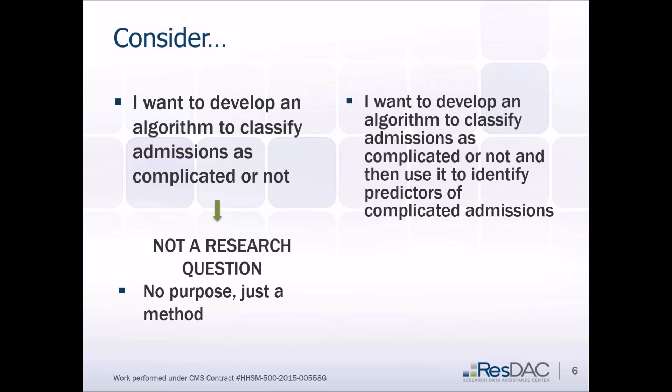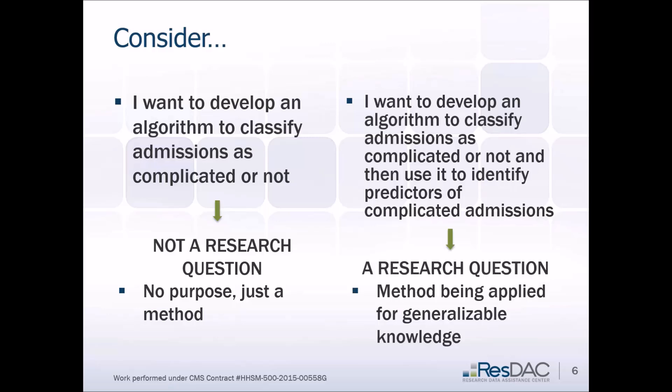However, if we rewrite it slightly, we can turn this into a research question: I want to develop an algorithm to classify admissions as complicated or not, and then use it to identify predictors of complicated admissions. It's the application of the method that turns it into research. We're still developing the same tool, but now we're applying the method for generalizable knowledge.